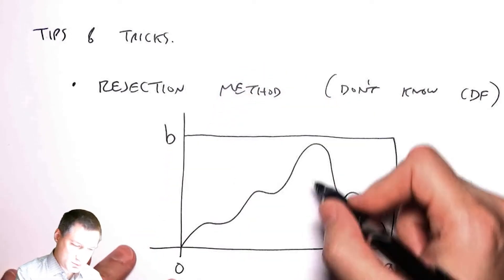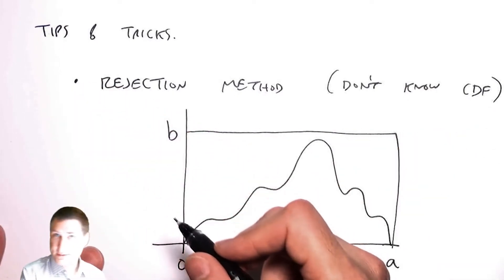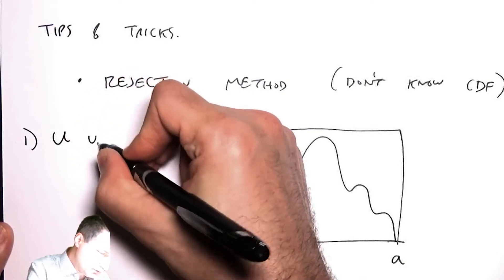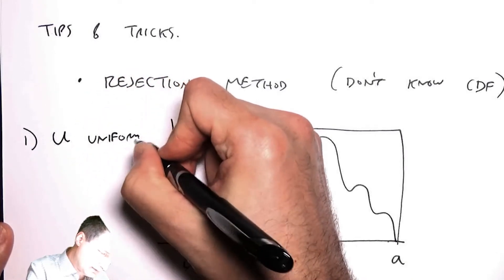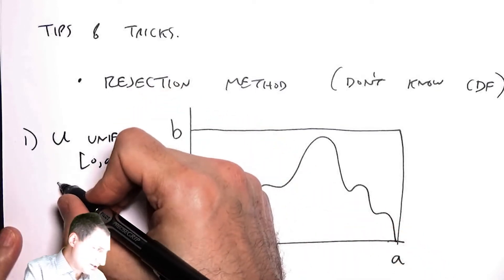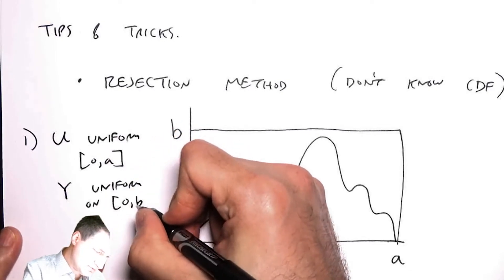What I'm going to do is first generate U uniform on 0A, and generate Y uniform on 0 to B.